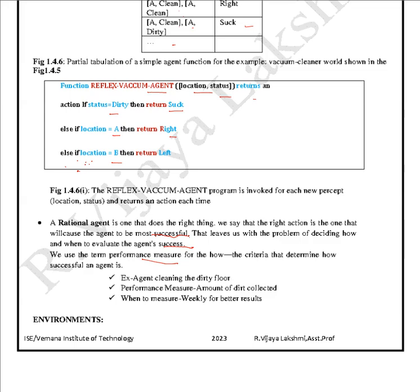The performance measure is the criteria that determines how successful an agent is. For a vacuum cleaner agent, performance is measured based on the amount of dirt collected, assessed weekly for better results. Each week we measure whether it is properly collecting the dirt — whether its performance is 100%, 90%, or 80% — and use that to enhance its features.